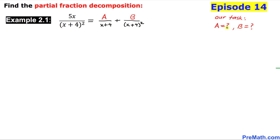The very first thing we are going to do is multiply each and every term by x plus four squared — we multiply across the board. So this x plus four squared cancels with x plus four squared on the left-hand side.